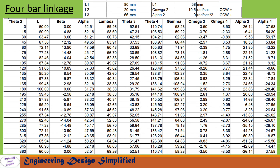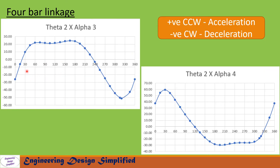In the first graph, θ2 is plotted along the horizontal axis and α3 along the vertical axis. When the graph is on the positive side, angular acceleration is counterclockwise; when on the negative side, it is clockwise deceleration. Similarly, the second graph plots θ2 versus α4, the angular acceleration of the follower link, from 0° to 360°. Positive values indicate counterclockwise angular acceleration and negative values indicate angular deceleration.